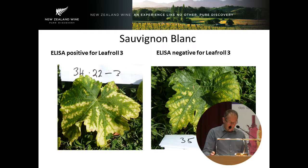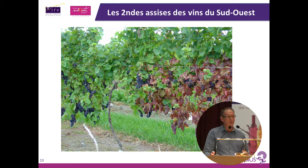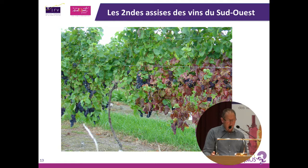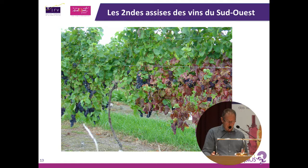Leaf Roll 3 affects fruit quality: reduced sugars, reduced flavour compounds, and reduced colour in red wines. Typically in New Zealand, fruit on Leaf Roll 3 infected vines is two Brix lower than healthy vines. Many New Zealand winemakers have made separate wines from infected and uninfected fruit, and in all cases the effects on wine quality and colour can easily be observed. These in-house trials, while not scientific, have prompted many New Zealand companies to adopt a zero tolerance to Leaf Roll 3 in their vineyard.